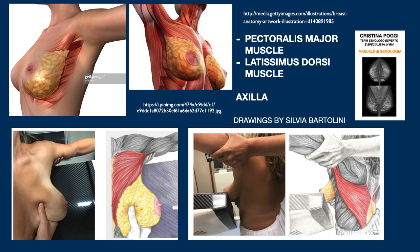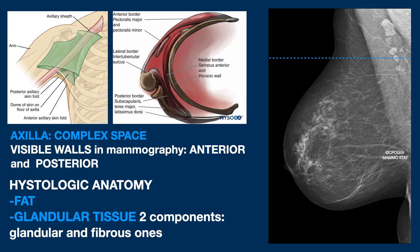Another fundamental anatomical portion is the axilla. This is a complex anatomical area. In mammography, only two walls are visible: the anterior and the posterior. Of the anterior, only the pectoralis muscle is visible, and of the posterior one, only the latissimus dorsi — and not always.